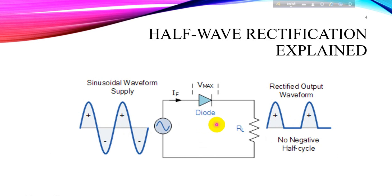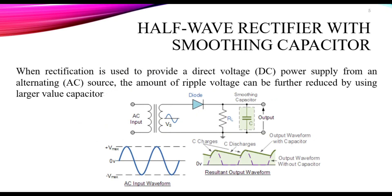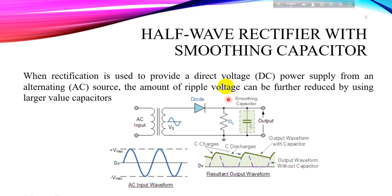Very often when rectifying an alternating voltage we wish to produce a steady and continuous DC voltage free from any voltage variation or ripple. One way of doing this is to connect a large value capacitor across the output voltage terminal in parallel with the load resistor. This type of capacitor is commonly known as a reservoir or smoothing capacitor. When rectification is used to provide a DC power supply from an AC source, the amount of ripple voltage can be further reduced by using larger value capacitors.